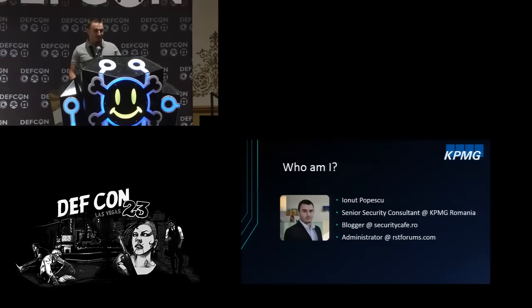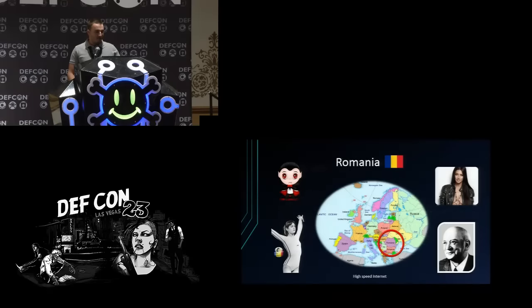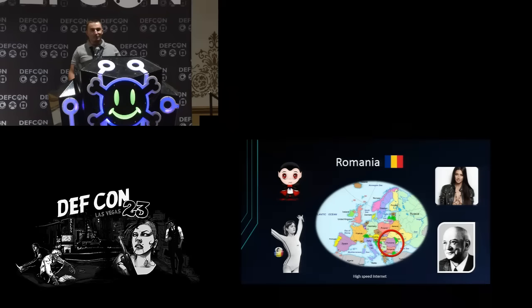I'm Janus Popescu. I'm from Romania and I work as a senior security consultant at KPMG Romania. I'm also a blogger at securitycafe.ro and the administrator of the biggest, largest security community from Eastern Europe. A few things about my country: it's located in Eastern Europe, it's the country of Dracula, we have the first stand in Olympics, we invented the jet plane, and we have probably the most beautiful girls in the world.